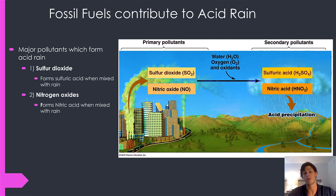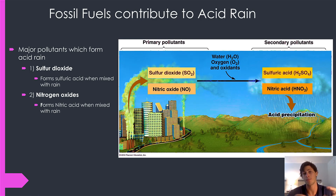Nitrogen oxides are formed naturally whenever you burn fossil fuels. Nitrogen molecules, N₂, dominate our atmosphere by volume — 78% of the entire atmosphere is nitrogen, and oxygen makes up 21%. So whenever you have nitrogen and oxygen in very hot conditions, like when burning fossil fuels, they react to form nitric oxides — different forms such as NO₂, NO₃, NO — that are then released as pollutants.